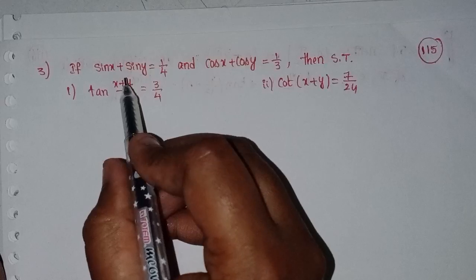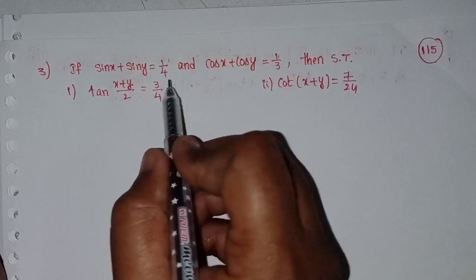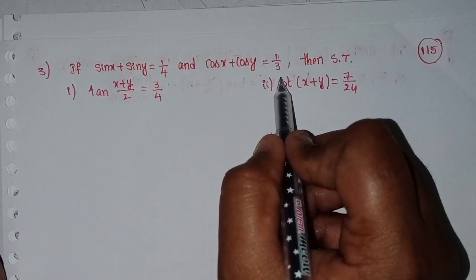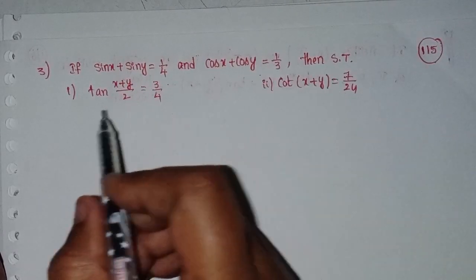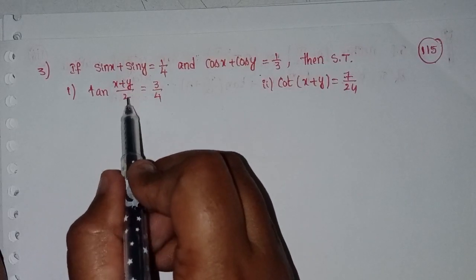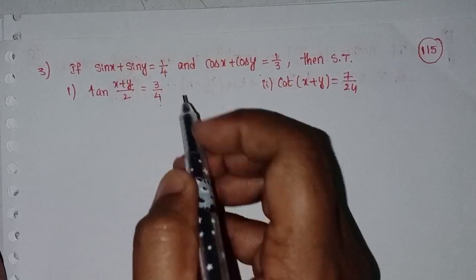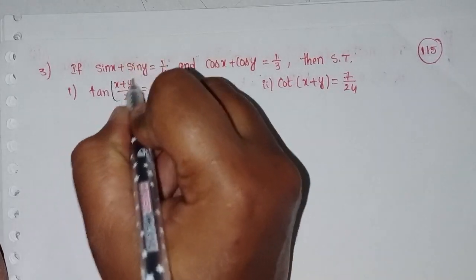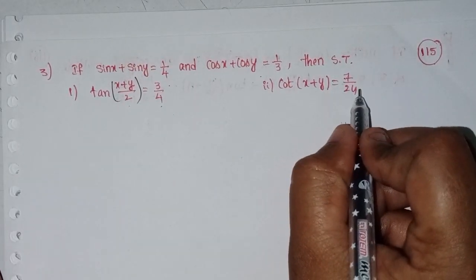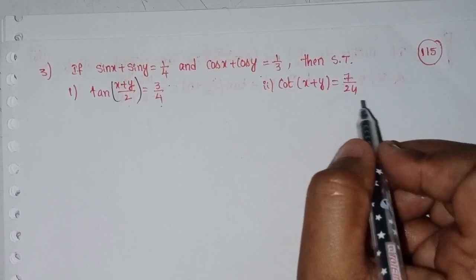If sin x plus sin y equal to 1 by 4, and cos x plus cos y equal to 1 by 3, we need to prove: tan of (x plus y) by 2 equals 3 by 4, and cot of (x plus y) equals 7 by 24.